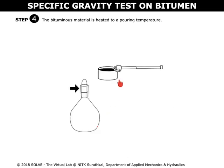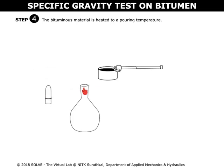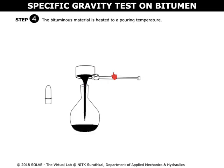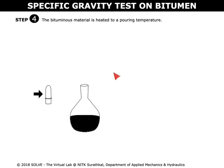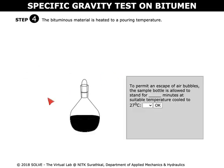Open the stopper of the specific gravity bottle and transfer the bituminous material into the bottle. Now close it. Select the correct answer in the pop-up question to proceed to the next step.